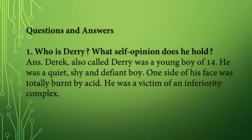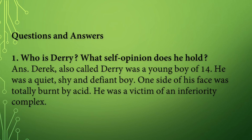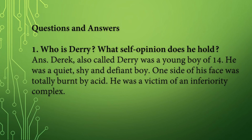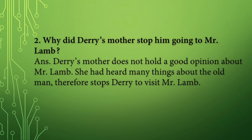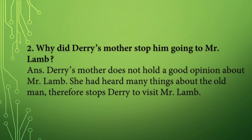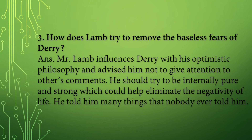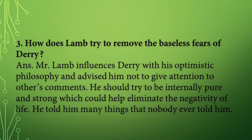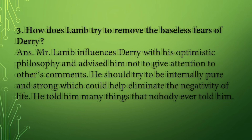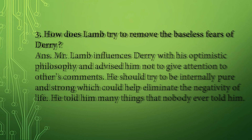Question 1: Who is Derry? What self-opinion does he hold? Answer: Derek, also called Derry, was a young boy of 14. He was a quiet, shy and defiant boy. One side of his face was totally burnt by acid. He was a victim of an inferiority complex. Question 2: Why did Derry's mother stop him from going to Mr. Lamb? Answer: Derry's mother does not hold a good opinion about Mr. Lamb. She had heard many things about the old man and therefore stops Derry from visiting Mr. Lamb. Question 3: How does Lamb try to remove the baseless fears of Derry? Answer: Mr. Lamb influences Derry with his optimistic philosophy and advised him not to give attention to others' comments. He should try to be internally pure and strong, which could help him eliminate the negativity of life. He also told him many things that nobody ever told him.